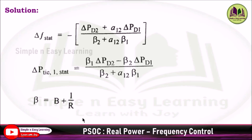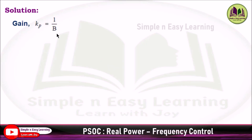For the steady-state frequency, the formula is: ΔF_stat = −(ΔPD2 + a12·ΔPD1) / (β2 + a12·β1). For tie line power flow: ΔP_tie = (β1·ΔPD2 − β2·ΔPD1) / (β2 + a12·β1). Here β = B + 1/R, and the power system gain Kp = 1/B.